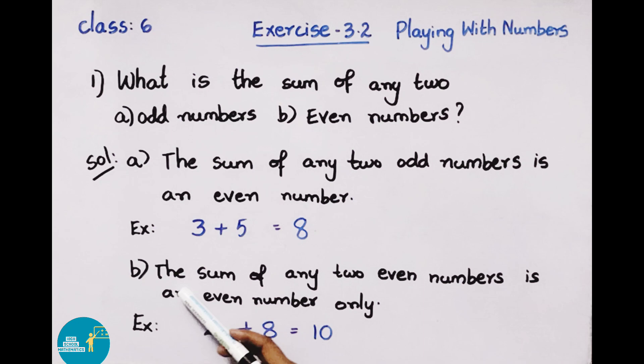Next, part b: The sum of any two even numbers is an even number only. For example, two even numbers 2 and 8, when added, gives 10, which is also an even number. So whenever two even numbers are added, we get an even number.